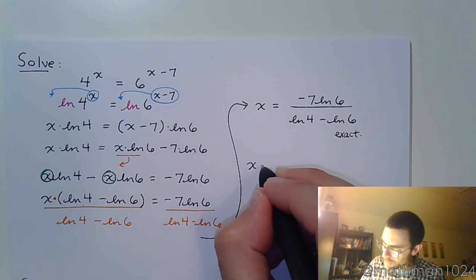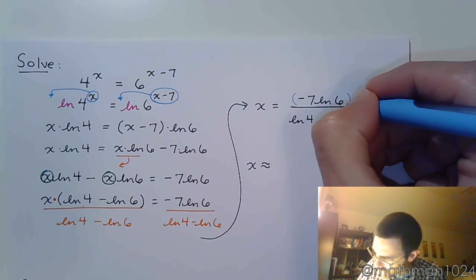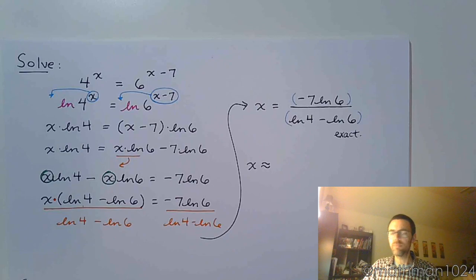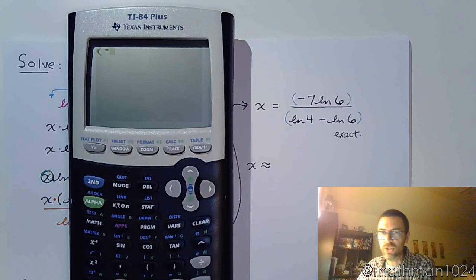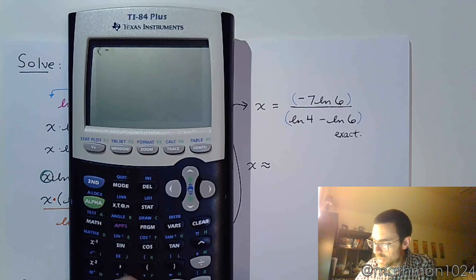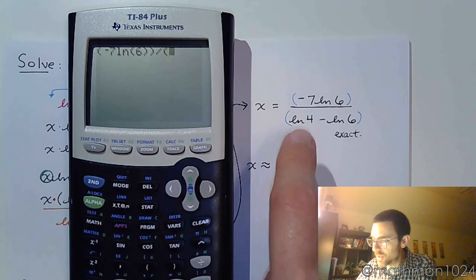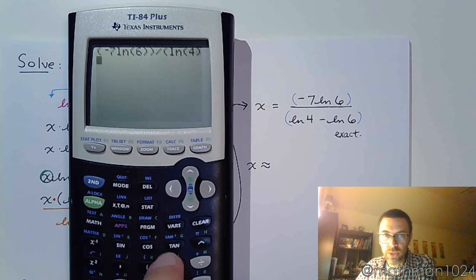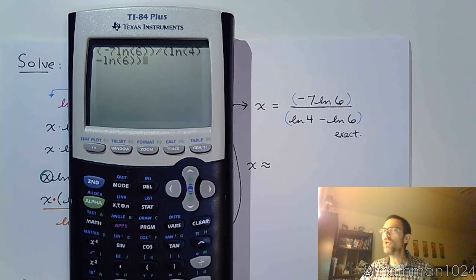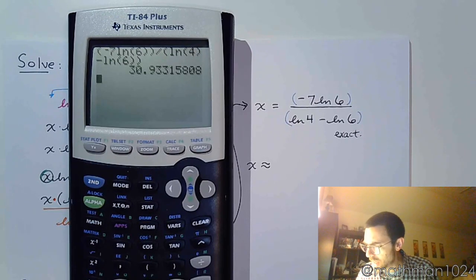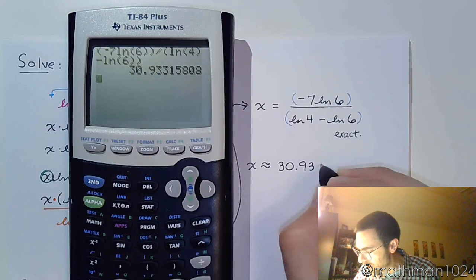But like we were talking about, we also want to talk about what would be the decimal approximation. Can we type this into our calculators and come up with a good value? Remember to use parentheses for your numerator and your denominator. Let's see what we can come up with. Alright, so big parentheses, and I have negative. Make sure you do negative and don't do the minus key. 7 natural log of 6, close the log, close the numerator, divide by, open up parentheses for your denominator. Natural log of 4, close the log, then minus natural log of 6, close the natural log of 6, close the denominator. Don't close the denominator too soon or you're not going to get the right answer. And we come up with x is approximately 30.933.